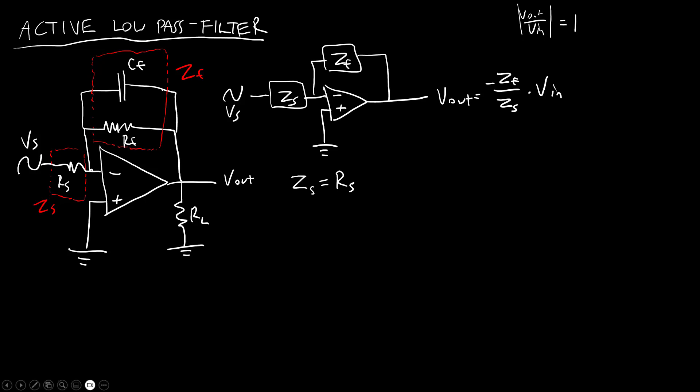I also know that my feedback impedance, again you can go back and watch the video about impedances, but impedances add inversely in parallel. So one over my feedback resistance is equal to one over the impedance of the feedback resistor, which is just RF, plus one over the impedance of the feedback capacitor, which if you remember the impedance of a capacitor ZC is one over J omega C. So it's not just equal to capacitance like the resistor. We have a frequency dependent equation here. So that's going to be one over CF J omega.